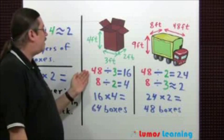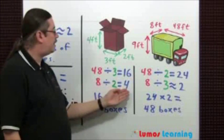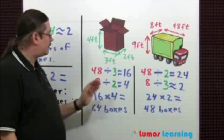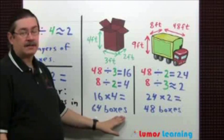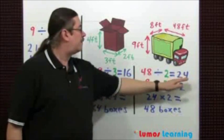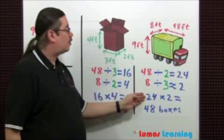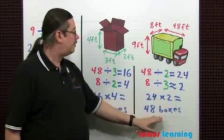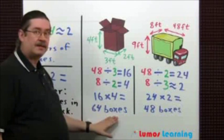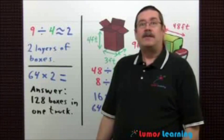First, divide 48 by 3 and you get 16. 8 divided by 2 equals 4. Think of that as 16 boxes in 4 rows, which equals 64 boxes. For the other case, divide 48 by 2, you get 24. 8 divided by 3 is approximately 2. Think of that as 24 boxes in 2 rows, which equals 48 boxes. We want the one with the larger number of boxes.